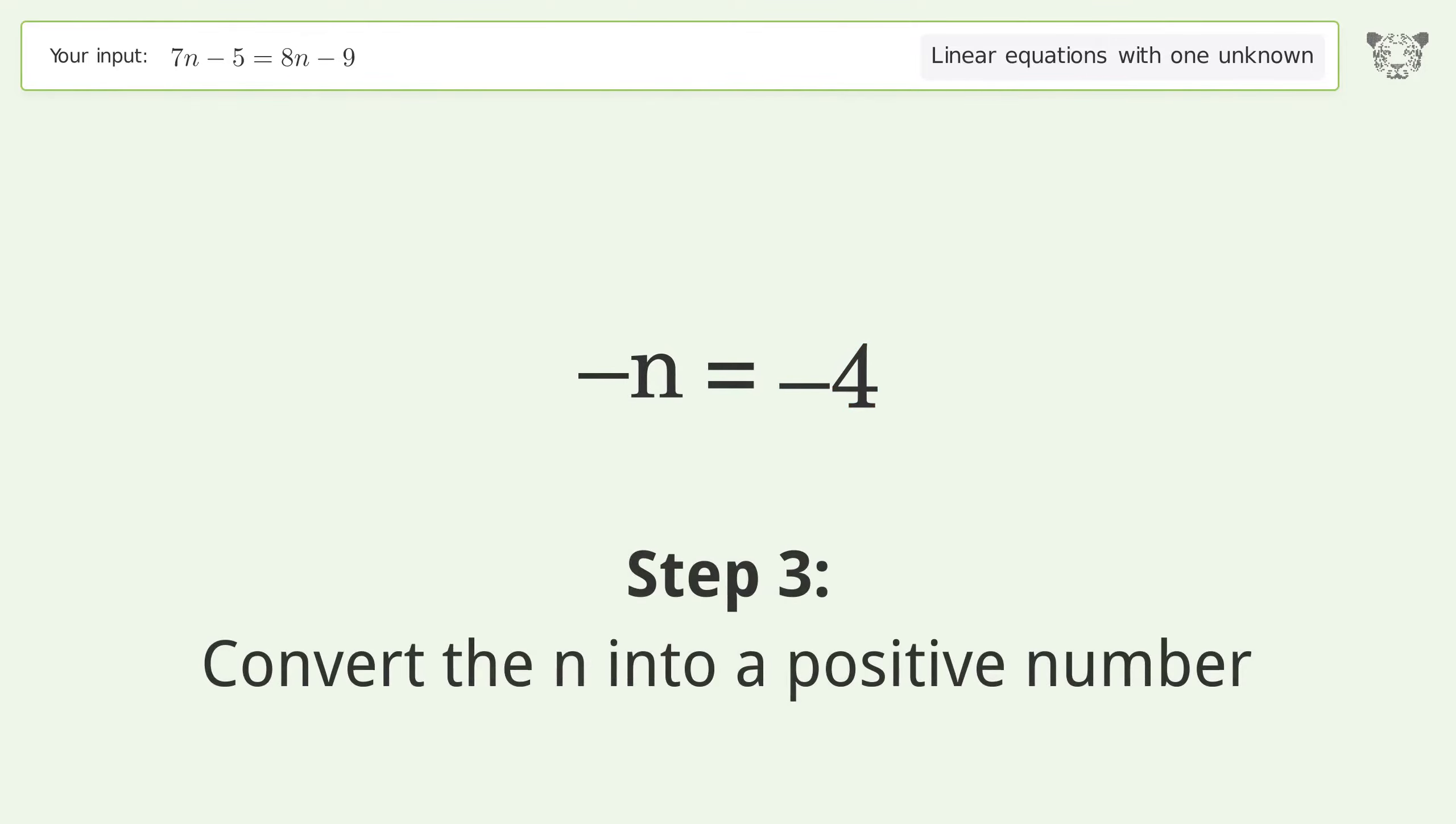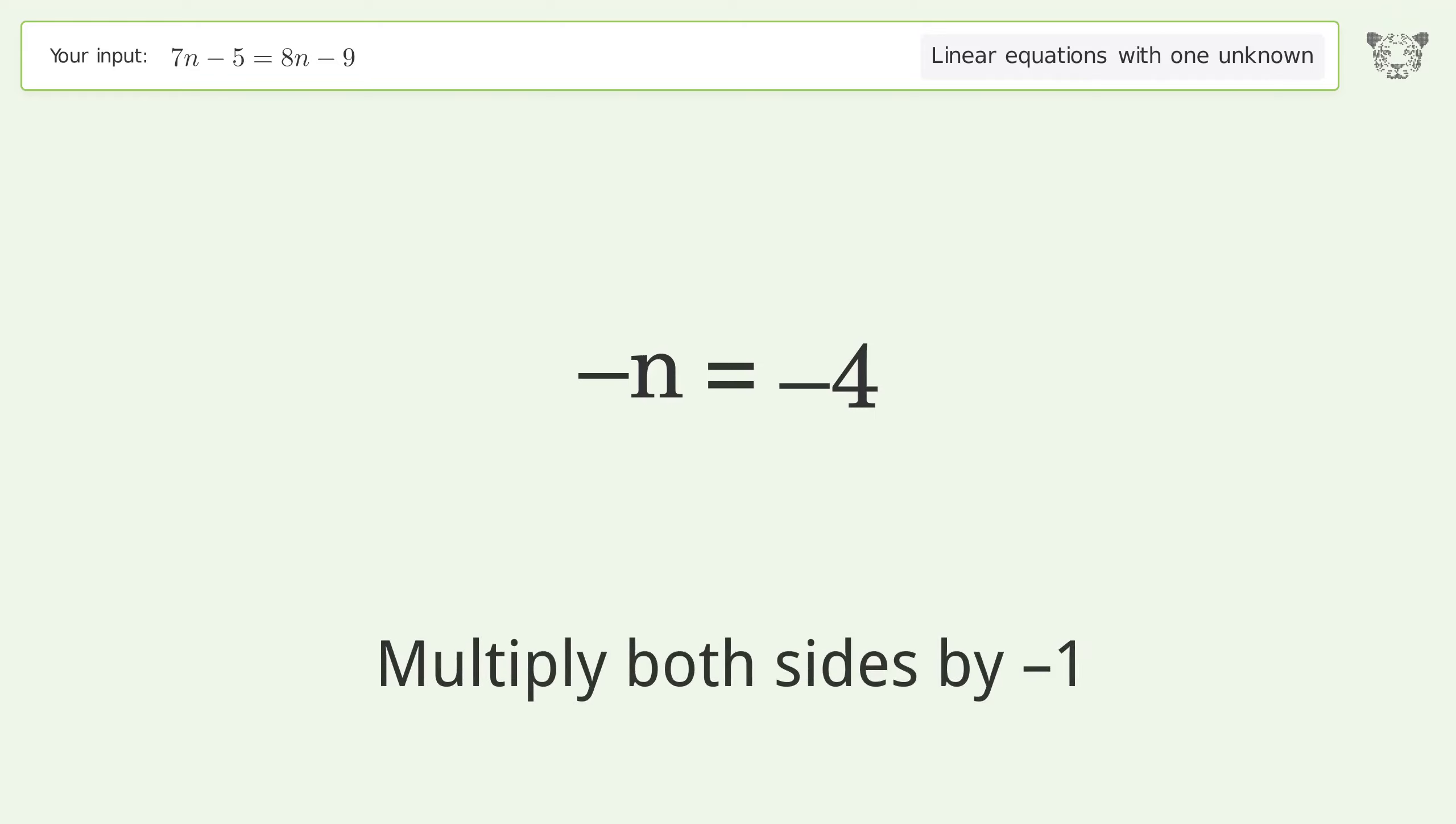Convert the n into a positive number. Multiply both sides by negative 1. Remove the 1s. Simplify the arithmetic.